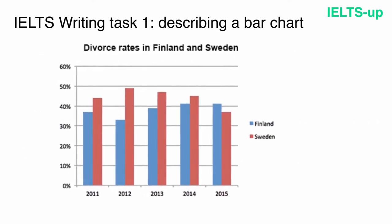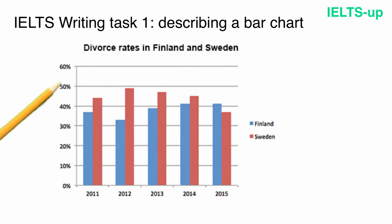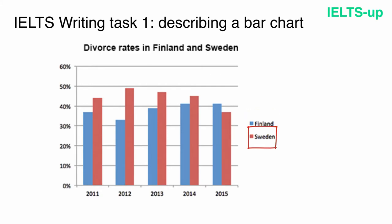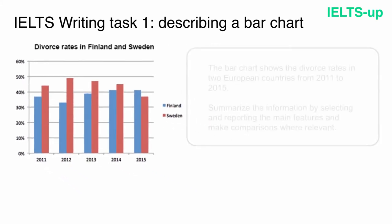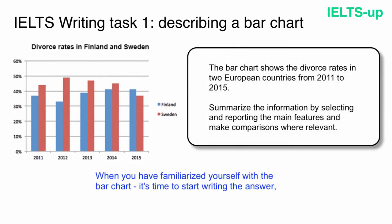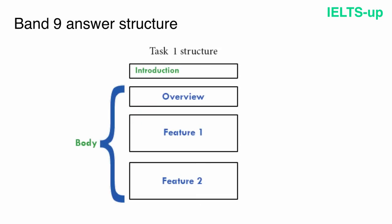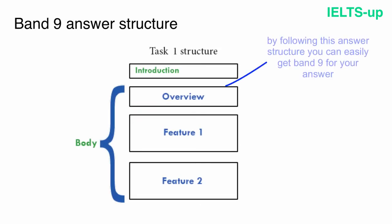Now let's look at the bar chart. The name of our chart is divorce rates in Finland and Sweden. Down the vertical axis we have the percentages and along the horizontal axis we have the years. The information is provided for two countries: Finland in blue and Sweden in red. When you have familiarized yourself with the bar chart, it's time to start writing the answer following the band 9 answer structure.